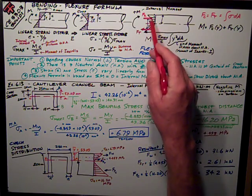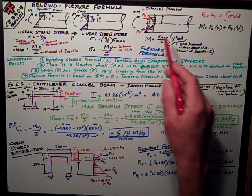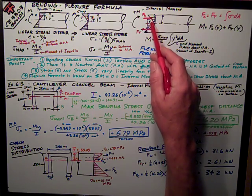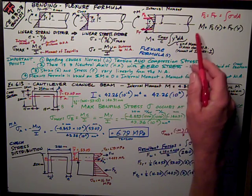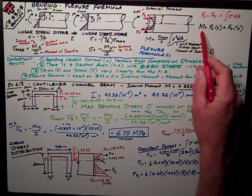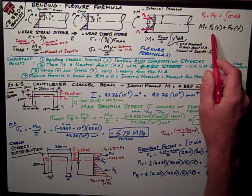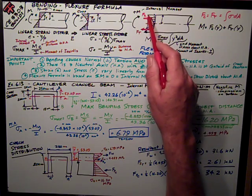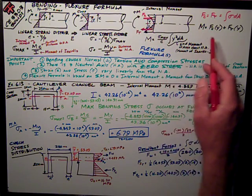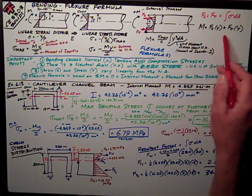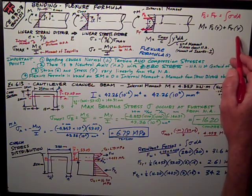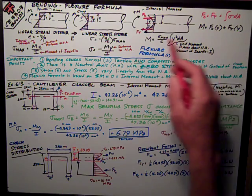By equilibrium, those forces have got to be equal, and I can locate the centroid of them and where they act, and that's a distance y from the neutral axis. I can say the sum of moments is the internal moment is equal to the sum of the compressive stress force resultant on the top times its y distance to the neutral axis plus the tensile stress force resultant times y on the bottom.